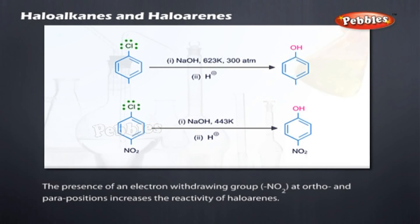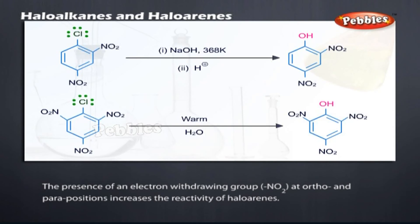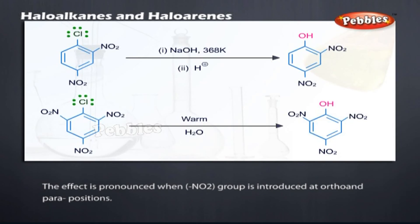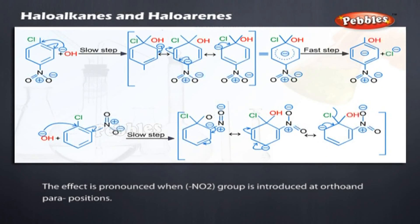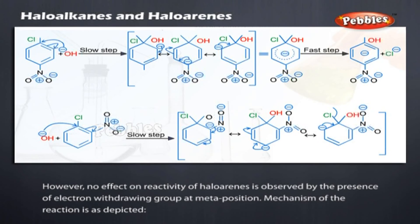The presence of an electron-withdrawing group at ortho and para positions increases the reactivity of haloarenes. The effect is most pronounced when a –NO2 group is introduced at ortho and para positions. However, no effect on reactivity is observed when an electron-withdrawing group is at the meta position. The mechanism of the reaction is as depicted.